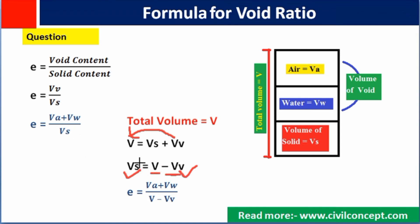We will see here we have to replace this Vs with this Vs. So what will we get? E equals to, it means void ratio is equals to volume of air plus volume of water divided by V total volume minus volume of void. And again this volume of void can be replaced with Va plus Vw.